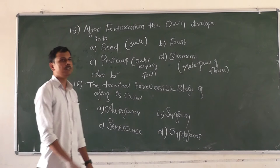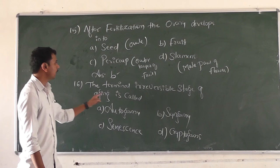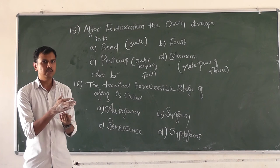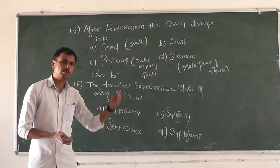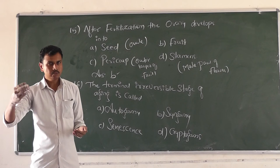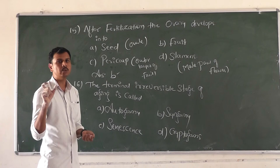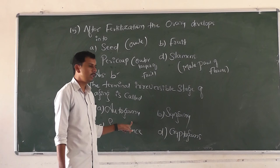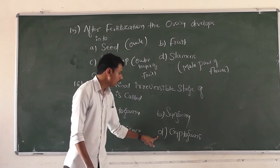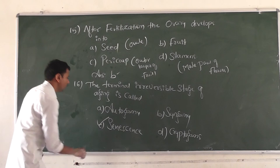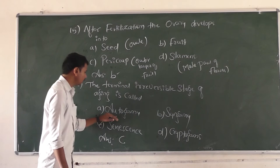Question number 16: The terminal irreversible stage of aging is called — option A autogamy, option B syngamy, option C senescence, option D cryptogams. The aging process is irreversible. The right answer is senescence — option C is the right answer.